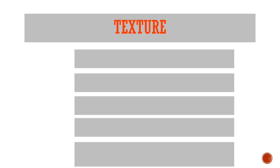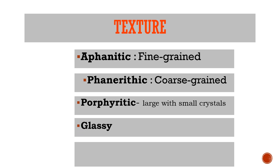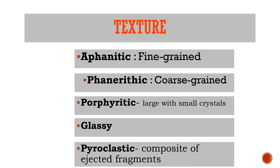Texture refers to the overall appearance of rocks. Aphanitic rocks are fine-grained, cooling quickly with little to no crystals, formed through rapid cooling at the earth's surface. Phaneritic rocks are coarse-grained, taking longer to cool, giving mineral crystals more time to grow, formed far below the surface. Porphyritic rocks have large crystals with small crystals. We also have glassy — a non-ordered solid from rapid quenching — and pyroclastic rocks, which are composites of ejected fragments.